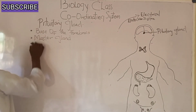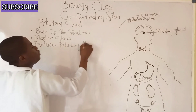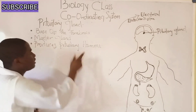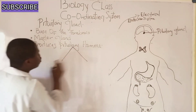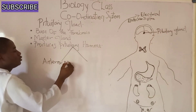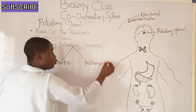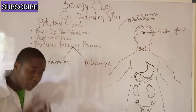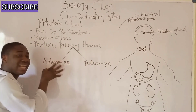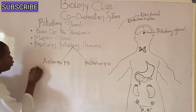The pituitary gland produces pituitary hormones, which are grouped into two: the anterior pituitary hormones and the posterior pituitary hormones. I will be listing and explaining the functions of all these hormones.